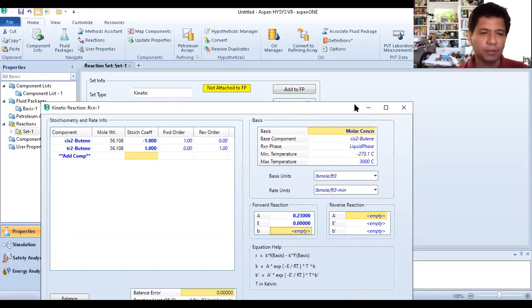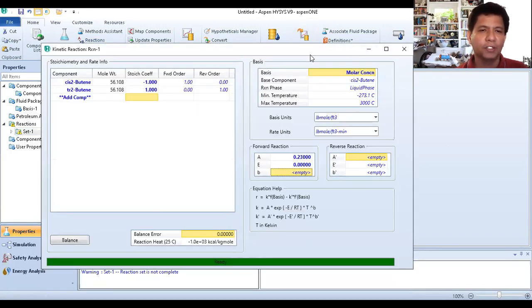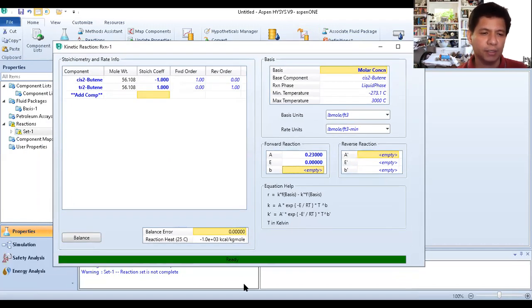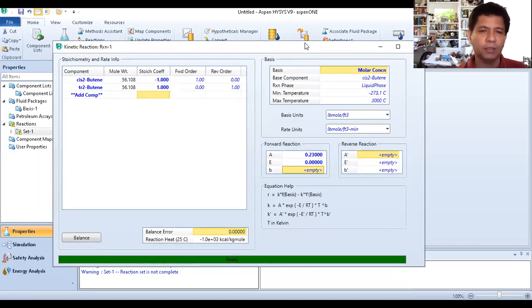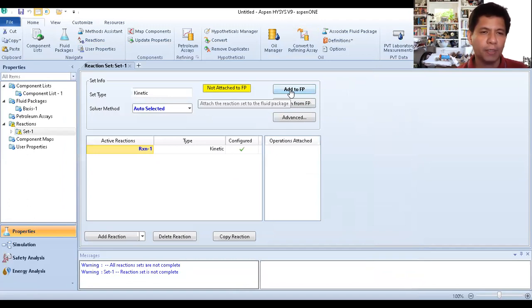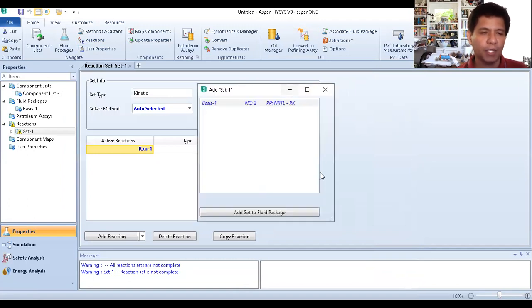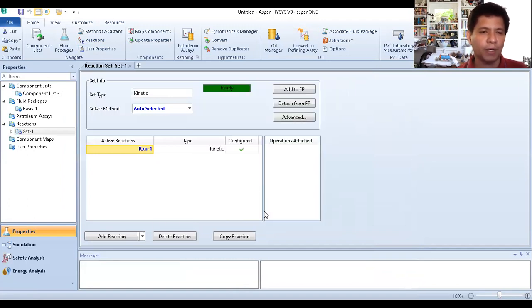You can see this is a conversion reaction. When it's a conversion reaction, there's a green checkmark - it's ready. You can close this. Then add to FP, add to fluid package. Add the set to fluid package and it will be added. The exclamation point will disappear. You're now ready to go to the simulation part.